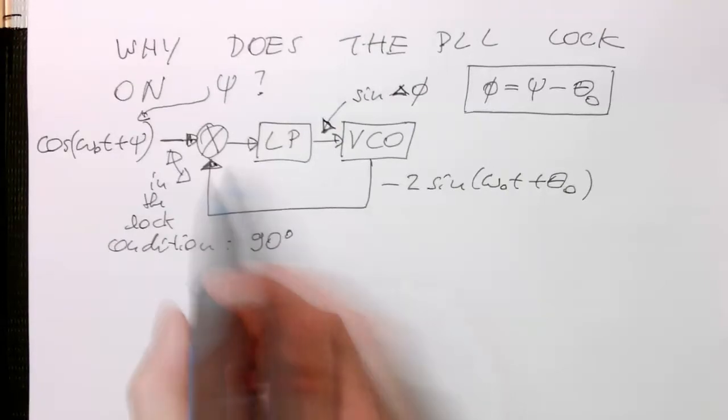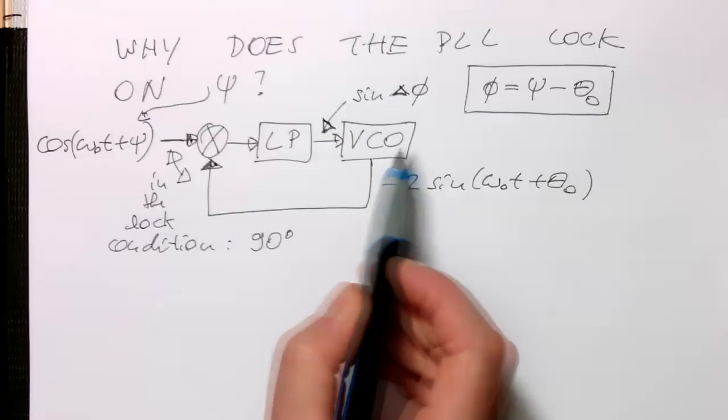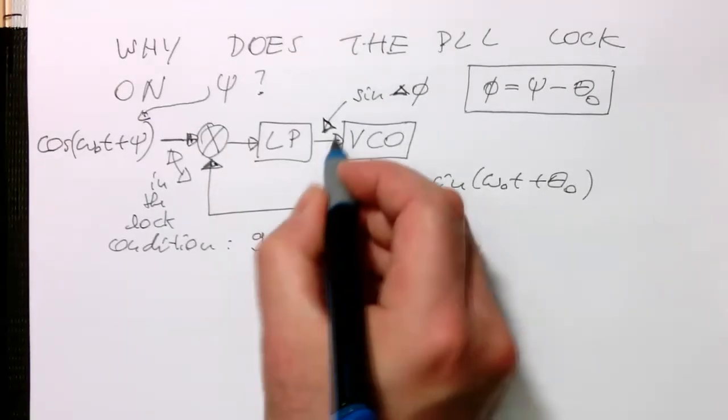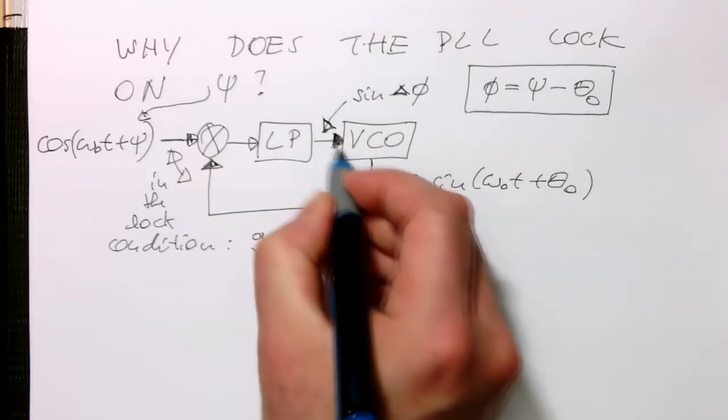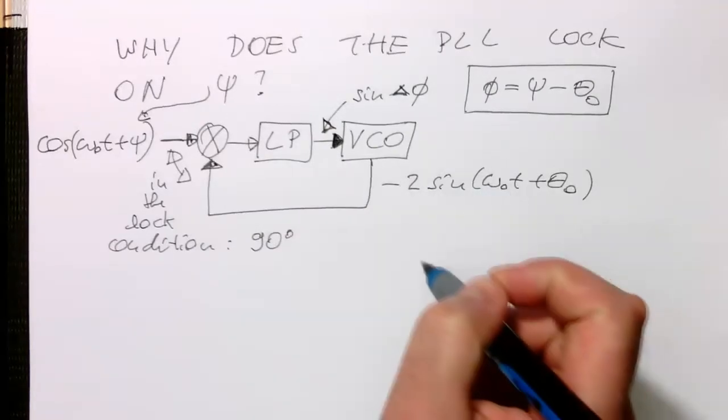And then after low pass filtering, this signal will be zero here. And so this term here will be zero and the VCO will be running exactly at a certain frequency and won't change that. And because of that, the phase also won't change of the VCO.